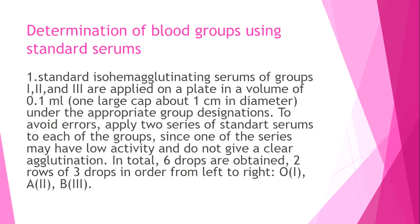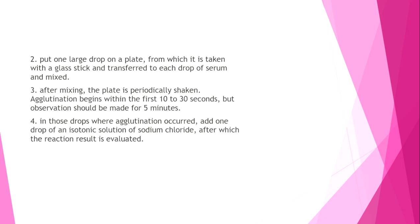For the standard serum method: hemagglutination serums of groups I, II, and III are applied to a plate in a volume of 0.1 ml, about 1 cm in diameter. To avoid errors, two series of standard serums are applied for each group since one series may have low activity and not give clear agglutination — six drops total, two rows of three drops from left to right. One drop of the tested blood is transferred to each serum drop and mixed. The plate is periodically shaken; agglutination begins within 10-30 seconds but observation should be made for five minutes. In drops where agglutination occurred, add one drop of isotonic sodium chloride solution, then evaluate the result.